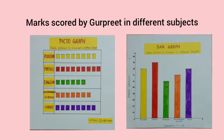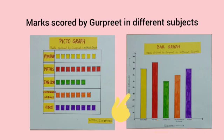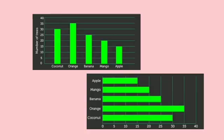A bar graph is a type of graph in which we represent data in the form of bars. To make a bar graph, firstly we write the heading. Then we draw a line from left to right horizontally and down to up vertically, and divide it into equal parts. On one side we write topics and on the other side we write numbers. Like in this bar graph, on the horizontal line we have written topics and on the vertical line we write numbers. The length of the bar depends upon the given data. We can also show a bar graph horizontally and vertically.